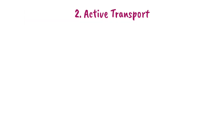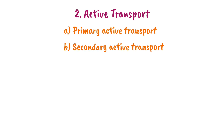There are two types of active transport: first, primary active transport; second, secondary active transport. In primary active transport, the energy is directly supplied by ATP. ATP (adenosine triphosphate) is broken down into ADP (adenosine diphosphate) plus one phosphate, releasing energy that directly drives the transport.